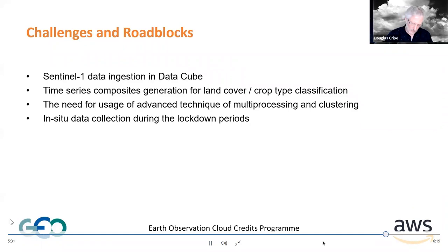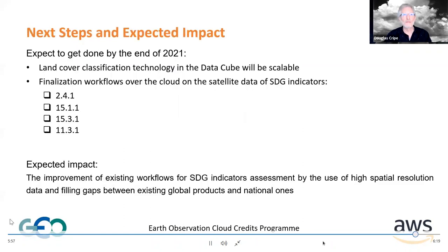By end of 2021, we expect to obtain scalable land cover classification technology and finalize the SDG indicators calculation workflows. As a result of the project, we will improve existing workflows for SDG indicators assessment using high spatial resolution data and fill gaps between existing global products and national ones.